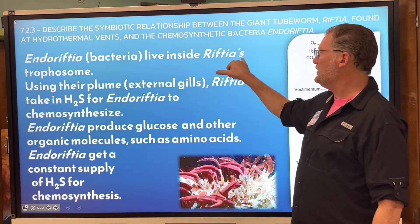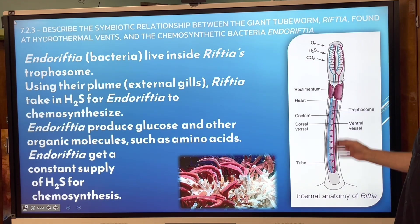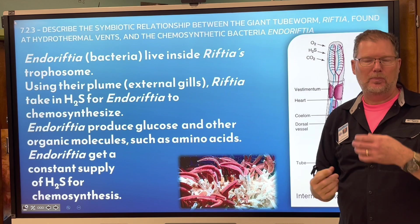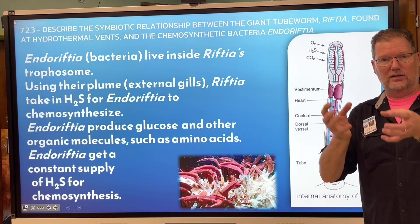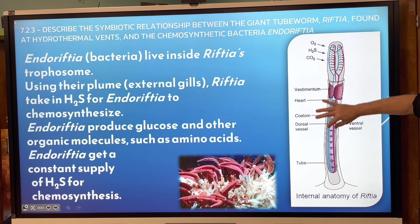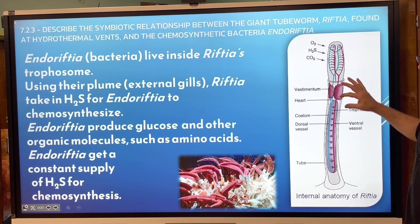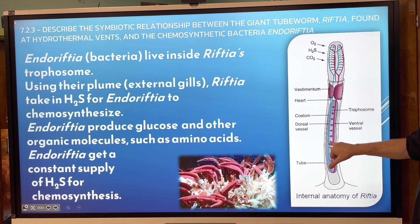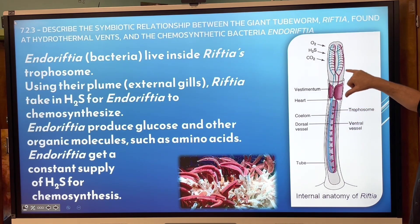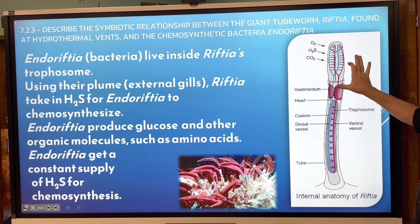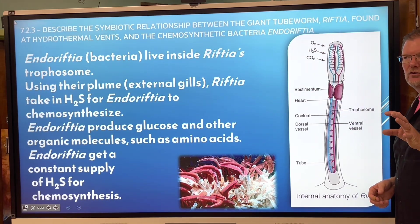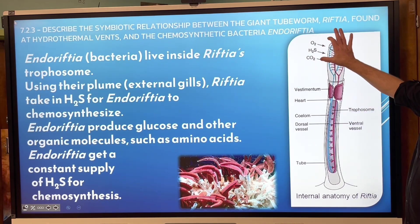They're called Riftia — that's their genus. They have endo-Riftia bacteria living inside them; 'endo' means inside. These bacteria live inside the trophosome, which is their internal region — they don't have a stomach. You can see they have vent vessels, a heart, and gills where gas exchange occurs. The bacteria convert incoming gases into food for the worm.